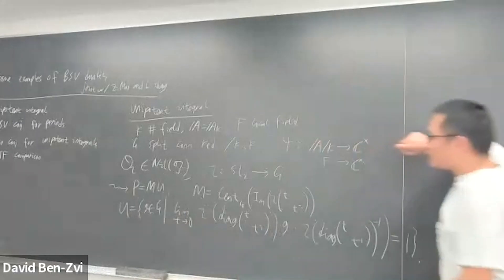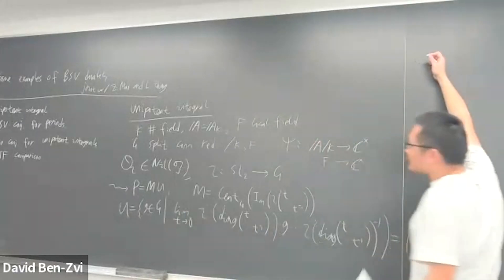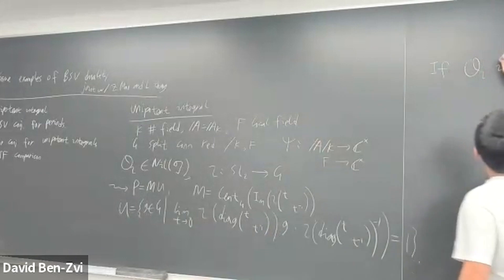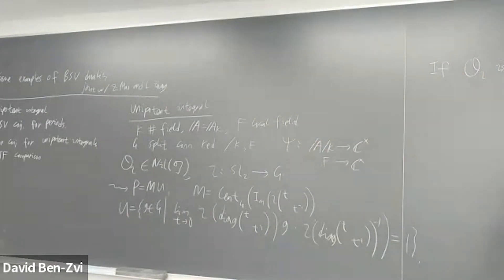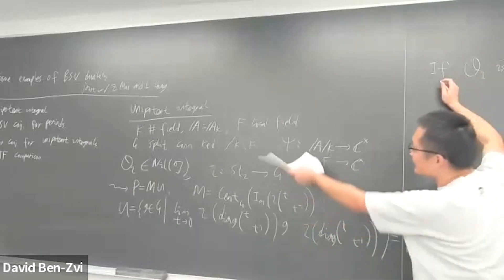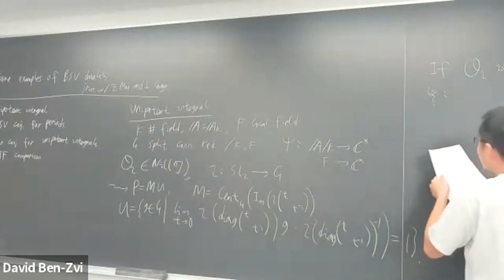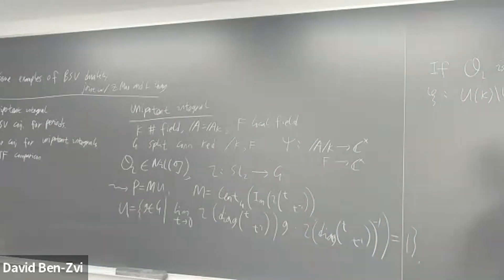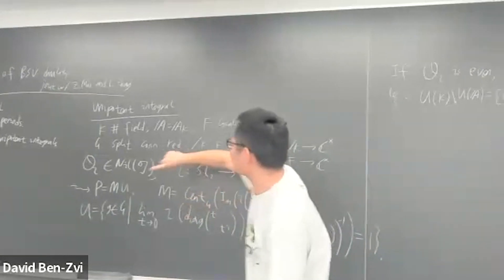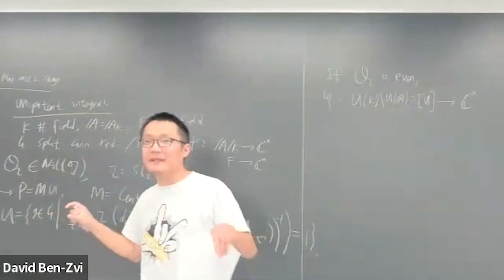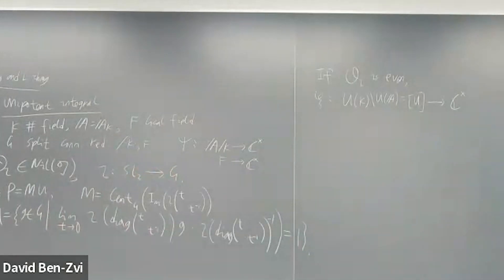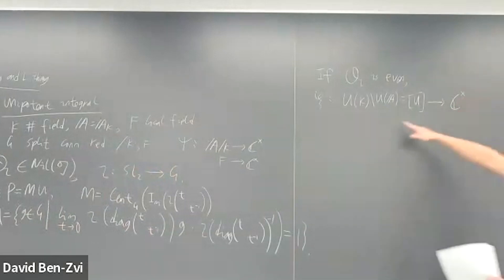There are two situations. The first corresponds to the Bessel case and the Fourier-Jacobi case. If the nilpotent orbit is even, then together with the additive character, we get a character on U. The character theta is given by: you let the torus act on the Lie algebra of G via the weight space — it does not have weight one space, so it starts with weight two. This theta gives you a generic character.